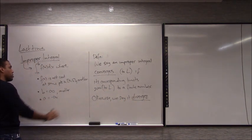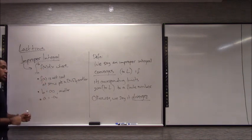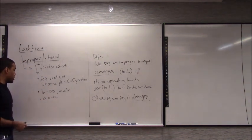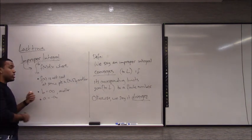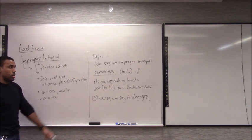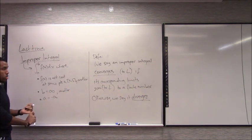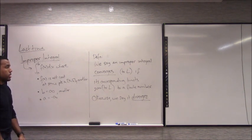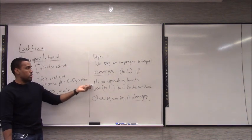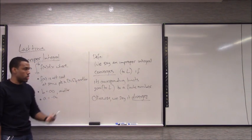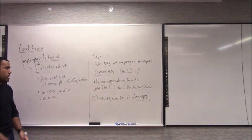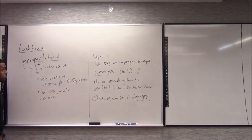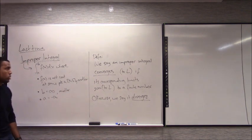You'd break the integral up so that you have one bad point per integral, approach these with a limit, then do the integrals applying whatever integration technique you need and the fundamental theorem of calculus, then take the limits. Once you take the limits, you're going to get some number, or infinity, or minus infinity, or it does not exist. In the case that it converges, the limit is actually just a real number. In all other cases we say it diverges — either to infinity, negative infinity, or it does not exist because it's just bouncing up and down.